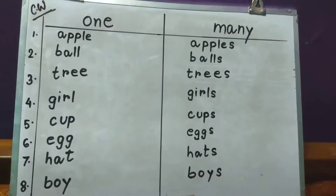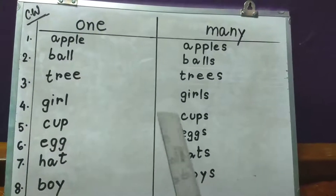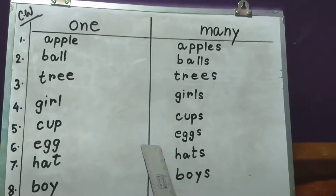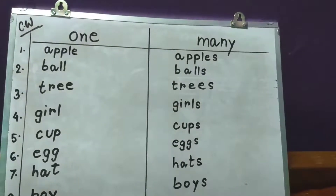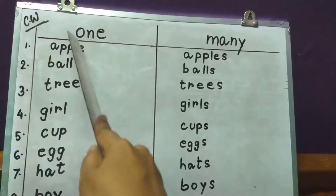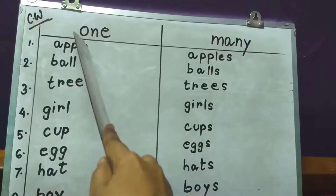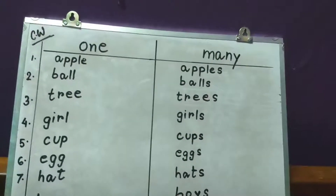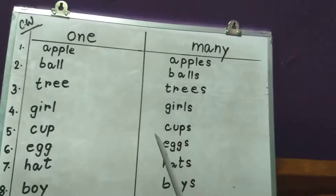Now you all have to learn these words and then you all will write in your English copy. Draw one line in between. Make two columns. Write the heading 'one' on your left side and 'many' on the right side, and then one after the other you all will write in your copy.